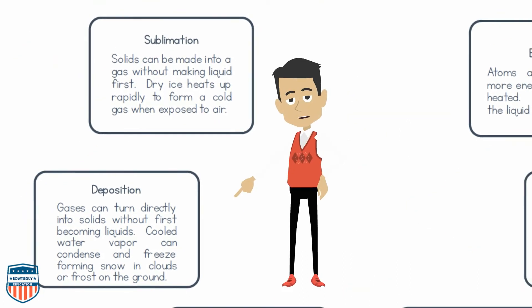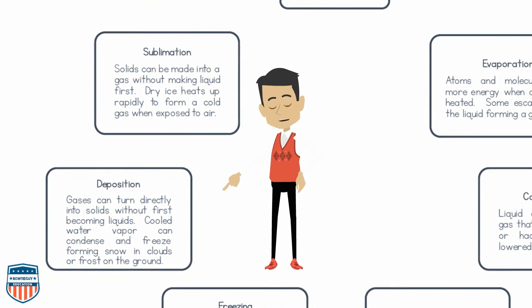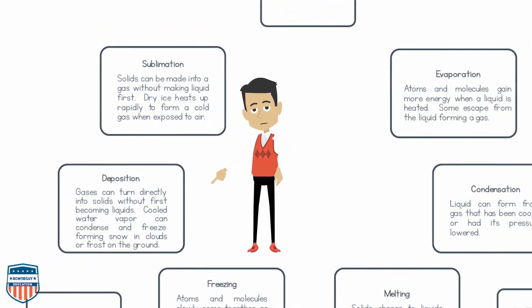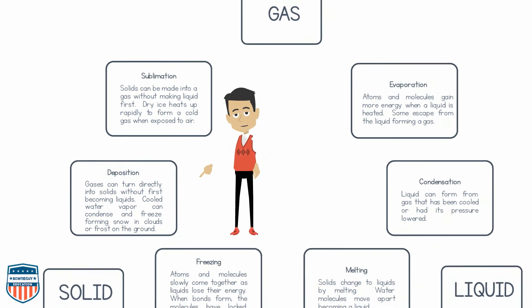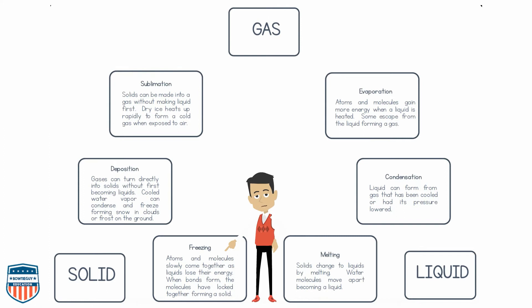Next, let's talk about deposition. Gases can turn directly into solids without first becoming liquids. Cooled water vapor can condense and freeze, forming snow and clouds or frost on the ground. Next, let's talk about solids and freezing. Atoms and molecules slowly come together as liquids lose their energy. When bonds form, the molecules have locked together, forming a solid.